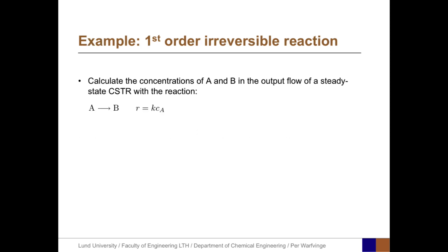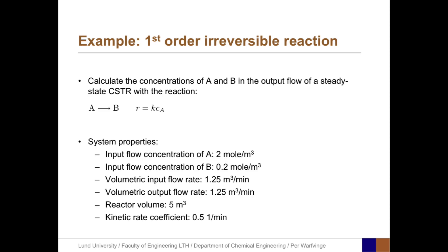Let's take an example for a first order irreversible reaction. Calculate the concentrations of A and B in the output flow of a steady state CSTR, where the reaction A → B has the rate equation R = K × C_A. System properties: C_in,A = 2 mol/m³, C_in,B = 0.2 mol/m³, volumetric flow rate Q = 1.25 m³/min, reactor volume V = 5 m³, and kinetic rate coefficient K = 0.5 min⁻¹.